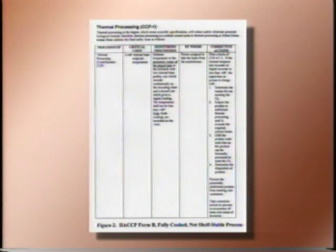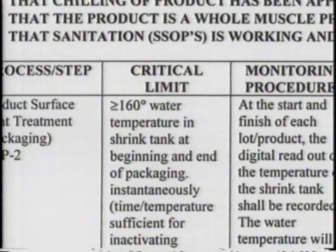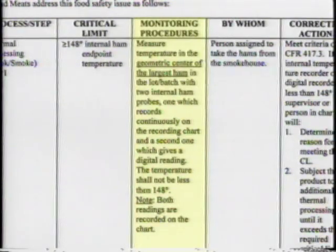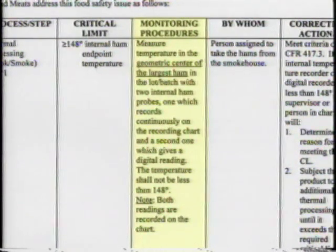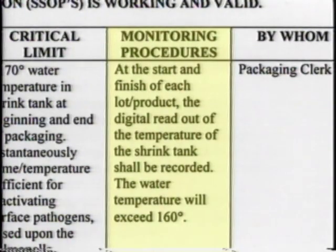Critical limits for each CCP seen in the second column of Form B include CCP-1: minimum of 148 degrees Fahrenheit internal ham temperature, and CCP-2: minimum of 160 degrees Fahrenheit water temperature in the shrink tank. Monitoring procedures for CCP-1 include checking final internal ham temperature in the geometric center of the largest ham at the end of the cooking cycle, using two thermometers: a digital recording thermometer and a continuous chart recording probe. Monitoring procedures for CCP-2 involve monitoring the water temperature of the shrink tank at the beginning and end of the packaging process.